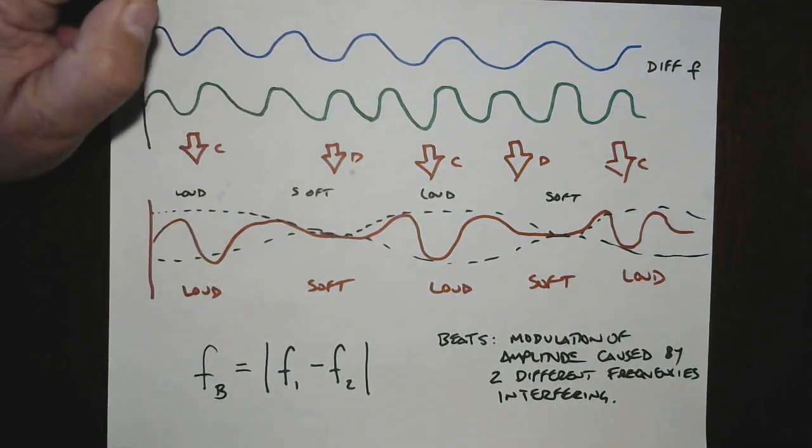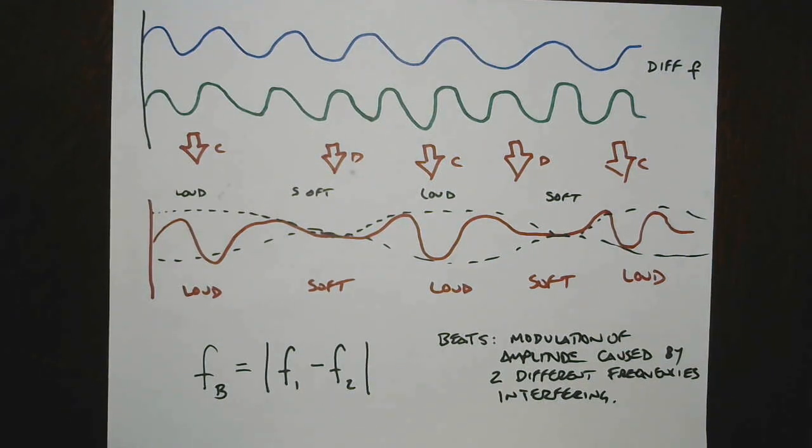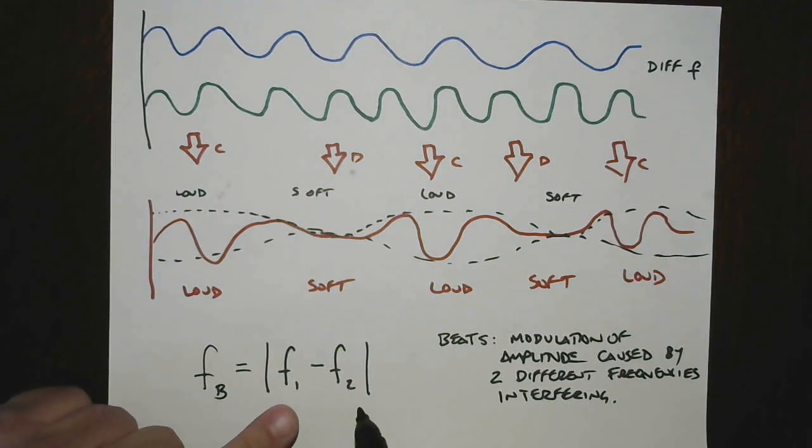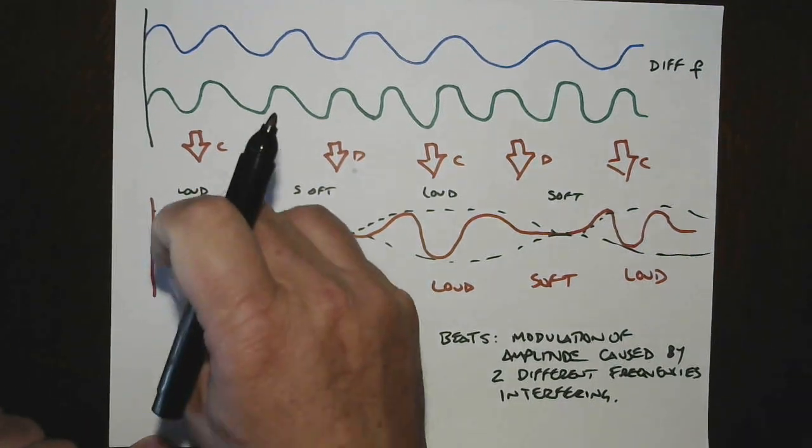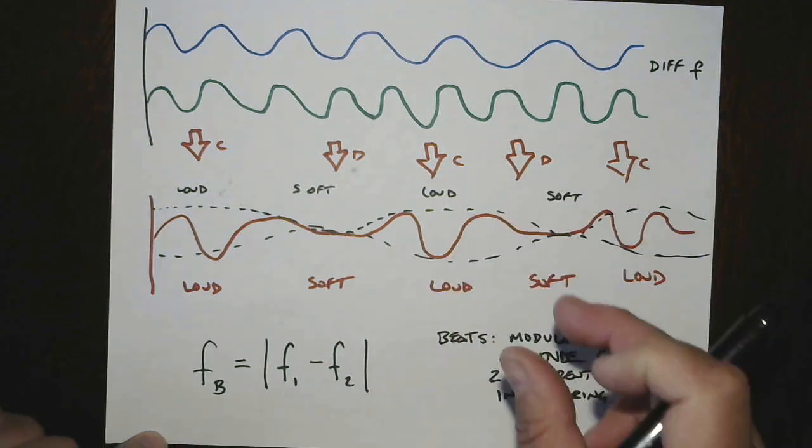If they're two wildly different frequencies, sometimes the beat frequency is something that is just crazy, and you would never hear it. But the closer the frequencies get, the smaller this beat frequency is, and the slower this loud to soft change takes place.